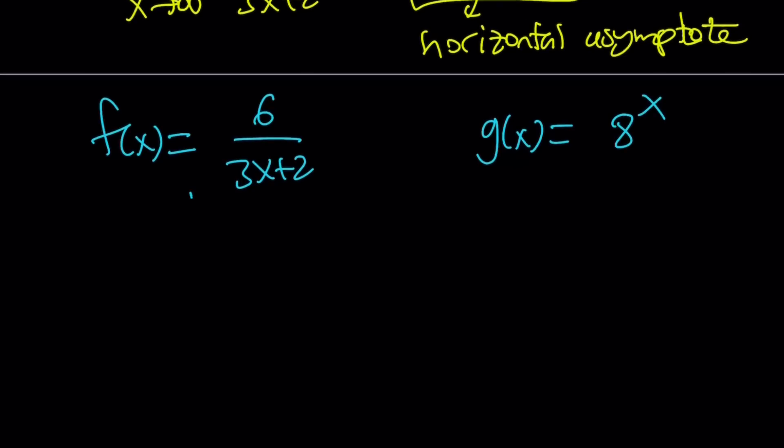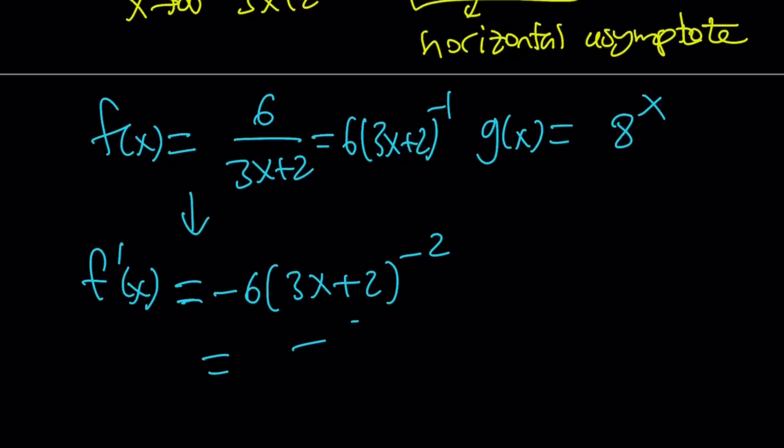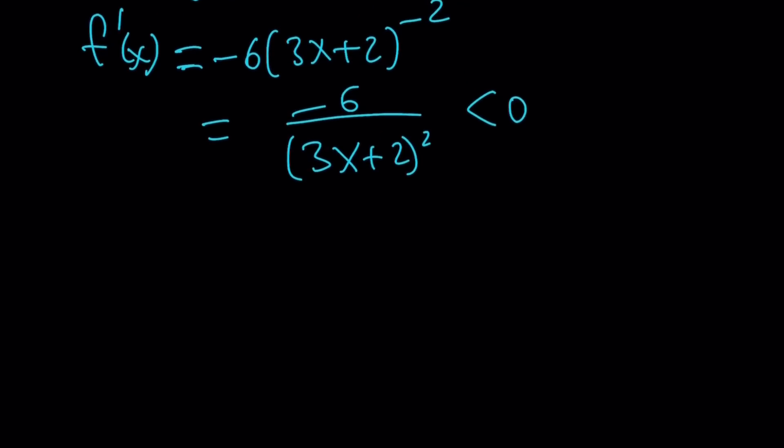But I want to focus on the derivative of f of x. Let's go ahead and differentiate it. If you differentiate f of x, you're going to get, by the way, I want to write it as six times 3x plus 2 to the power negative one. You can also use other rules for differentiation. But anyways, you can just bring down the negative one, negative six, and then reduce the power by one. That's going to give you negative six. And guess what? This is always going to be negative.